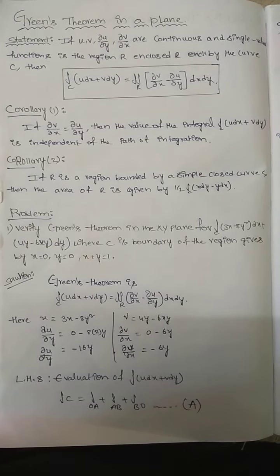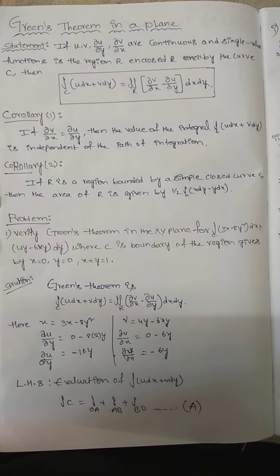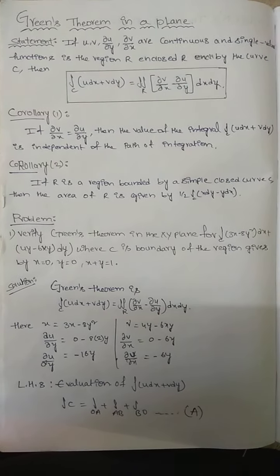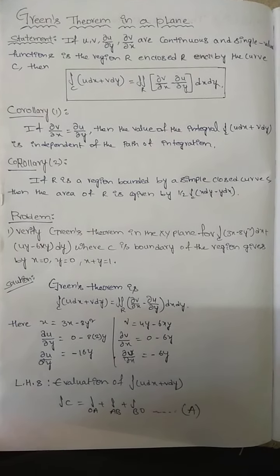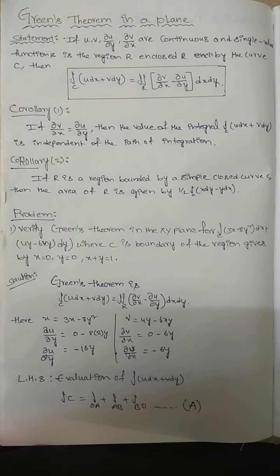Comparing with the problem: u = 3x − 8y², so ∂u/∂y = −16y. Comparing v in the given problem: v = 4y − 6xy, so ∂v/∂x = −6y.